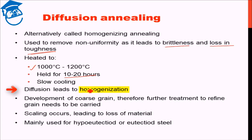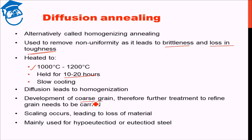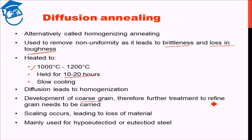The disadvantage is that since the temperature is quite high, elongated exposure to that high temperature leads to coarsening of grains — really large grains are obtained as a result of diffusion annealing. Therefore, in order to counter this, further heat treatment processes need to be carried out in order to refine the grain. Grain refinement needs to be done after diffusion annealing.